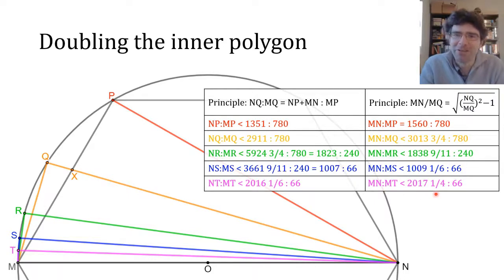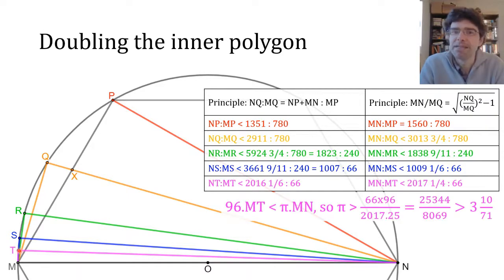And this is where we can stop this time. Think about it, the perimeter of an inscribed 96-sided polygon is going to be 96 lots of MT. And that has to be less than pi times the diameter MN because the polygon is inscribed so its perimeter is less than the circumference. And so that's how we end up with our lower bound for pi as well.